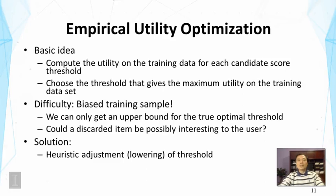So then we can just choose the threshold that gives the maximum utility on the training data. But this, of course, doesn't account for exploration that we just talked about. And there is also the difficulty of biased training sample. So in general, we can only get an upper bound for the true optimal threshold. Because the threshold might be actually lower than this. So it's possible that the discarded item might be actually interesting to the user. So how do we solve this problem? Well, we generally, as I said, we can lower the threshold to explore a little bit.